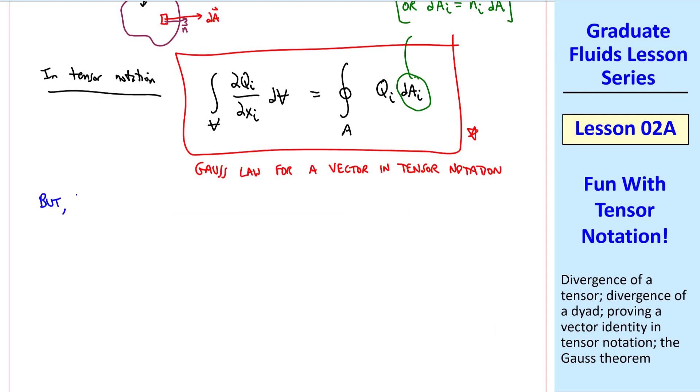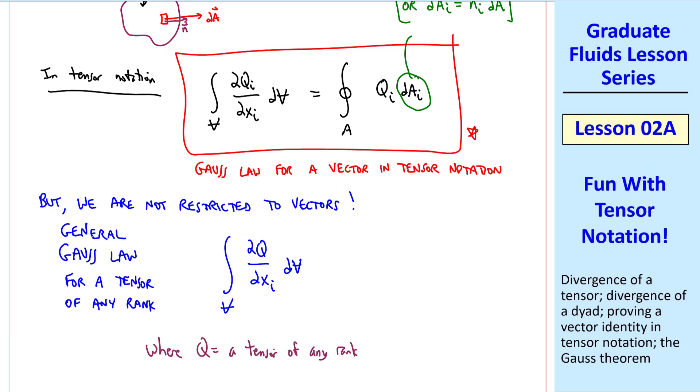But, and here is where it gets a little more fun, we are not restricted to vectors. We can write a general Gauss law or theorem for a tensor of any rank. Namely, if we let q be a tensor of any rank, volume integral of del q del xi dv is equal to the integral over the whole surface area of q dAi. This q can be anything, a scalar, a vector, second order tensor, an nth order tensor. And this equation is still valid. This general Gauss law will become very useful to us in later lessons.